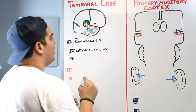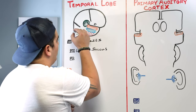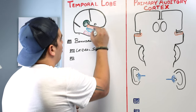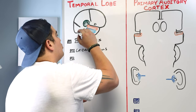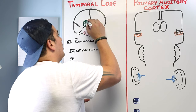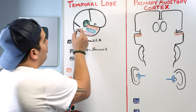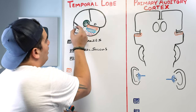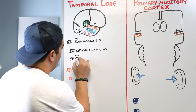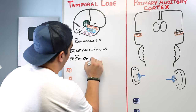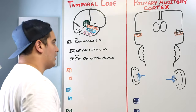There's another boundary — this one isn't actually a defined sulcus. There's a little notch here called the pre-occipital notch. If you draw an imaginary line from that pre-occipital notch at an angle towards the tip of the lateral sulcus, it beautifully separates the temporal lobe from the occipital lobe.